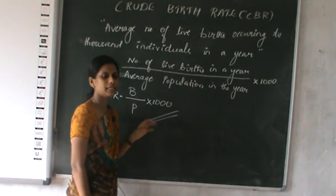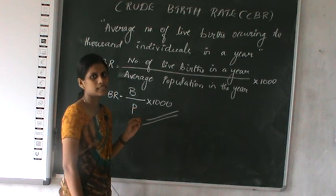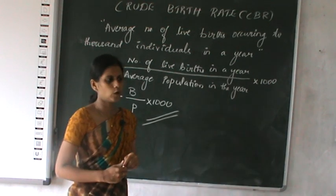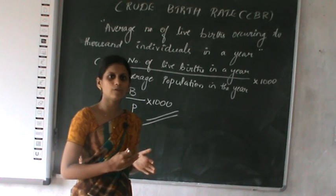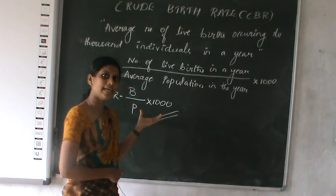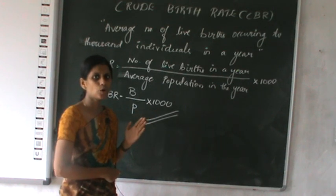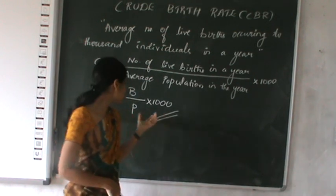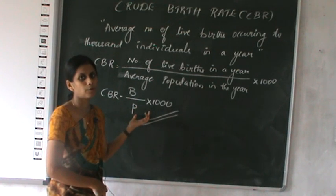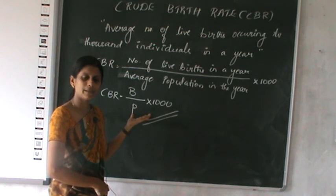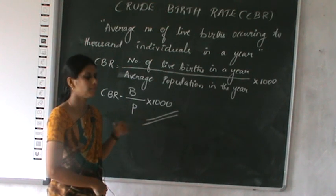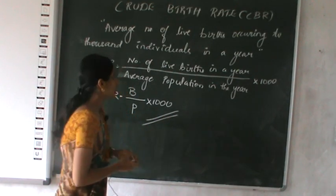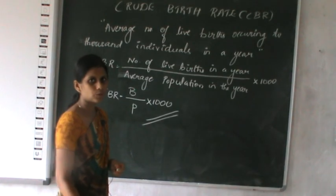What are the demerits? The demerit is that here we are not going to consider age and sex composition while calculating. Child bearing age is from 15 to 49, but here we consider the age group from 0 as well — there is no classification related to age or sex. We include both men and women in the population; we are not going to consider only women population.